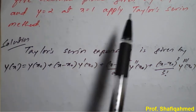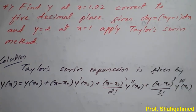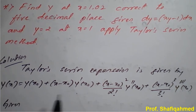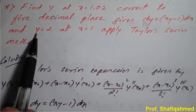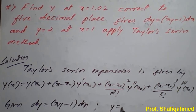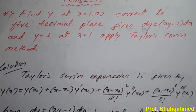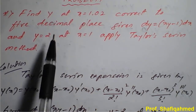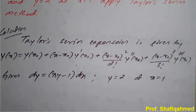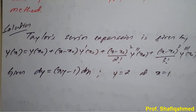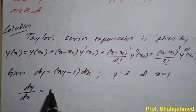Now I will collect the given data from the question. Given: dy = (xy - 1)dx, and y = 2 at x = 1. Also, x = 1.02 is the value we need to apply at the end. Rearranging by cross-multiplying, dy/dx = xy - 1.